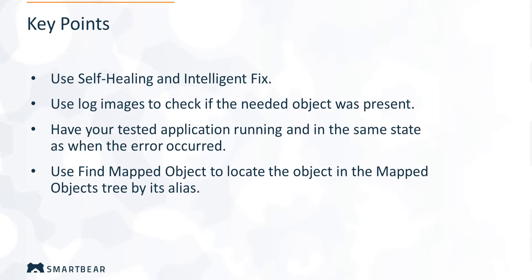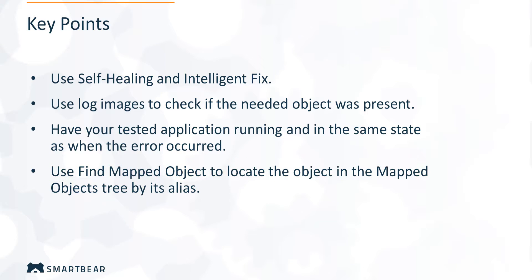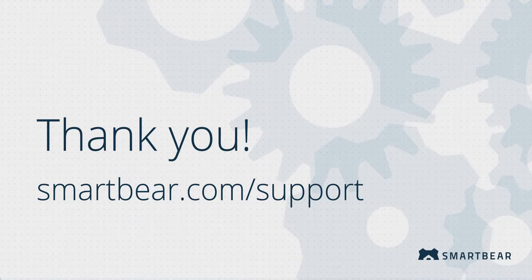Before we finish, here are some major key points for fixing the object does not exist error. Use the self-healing test run mode and intelligent fix whenever possible. Examine images posted to the test log during the run to learn your application state when the error occurred and check if the needed object was present. When troubleshooting the error, have your tested application running and in the same state as when the error occurred. To locate the object's position in the mapped objects tree quickly by the object's alias, use the find mapped object command. This covers the typical cases of the object does not exist error. This is the third video on this topic — if you have not seen the first and second, please go back and watch them. If you have any questions, check out our documentation, videos, and online community on our support portal. Thank you.